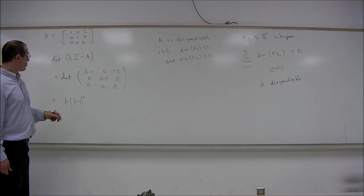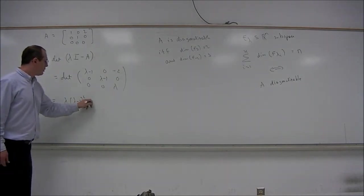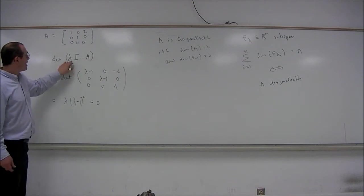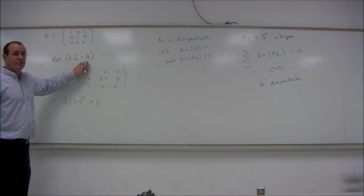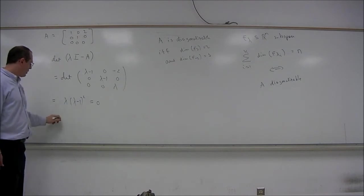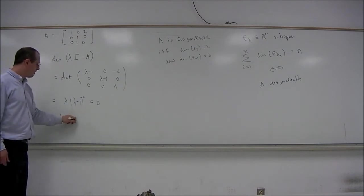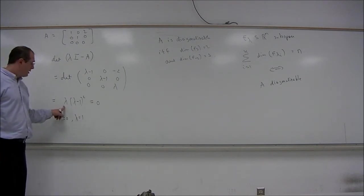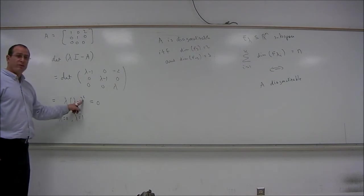The eigenvalues are obtained by setting this determinant equal to 0, because we want this matrix lambda I minus A to be singular. So the solutions to this equation are obviously lambda equals 0, and lambda equals 1. Lambda equals 0 is a root of multiplicity 1, and lambda equals 1 is a root of multiplicity 2.